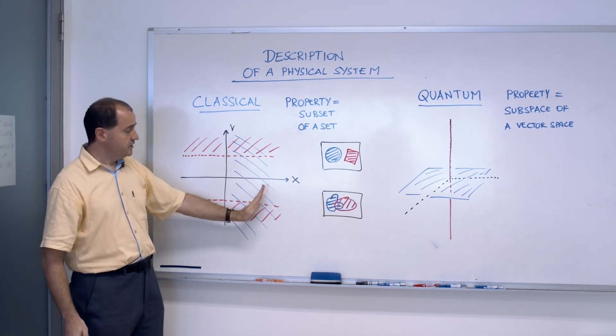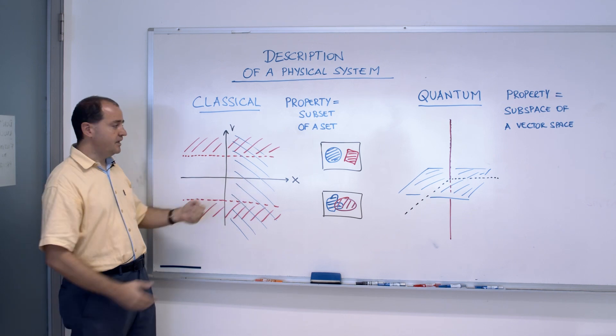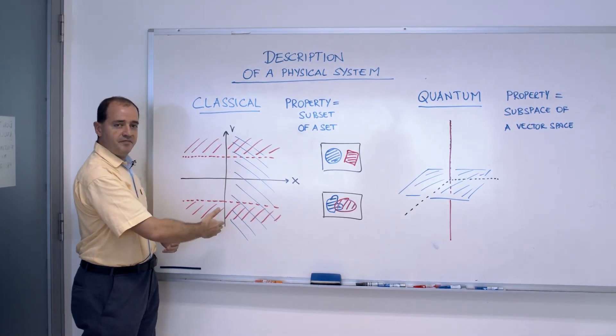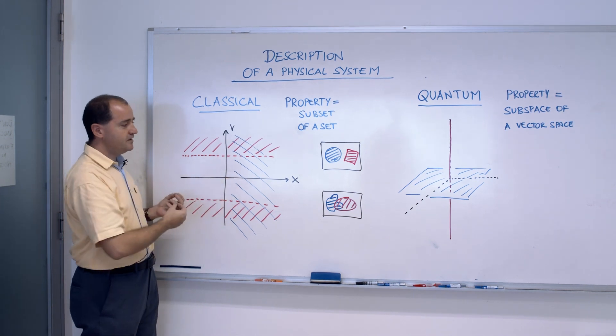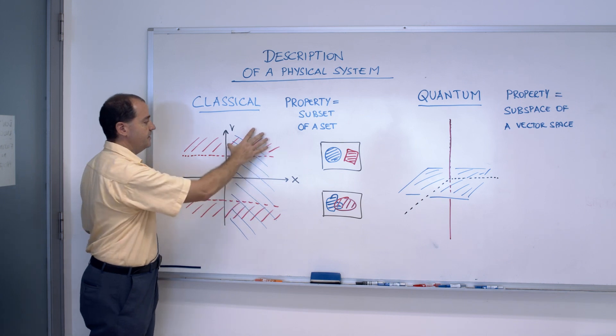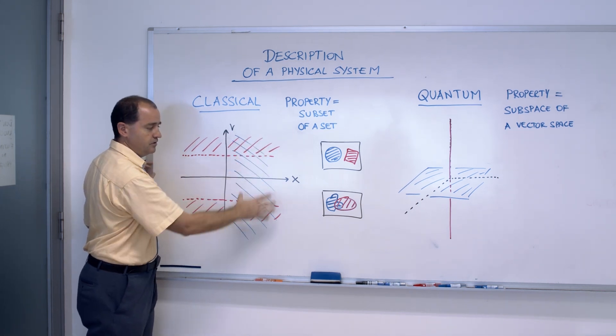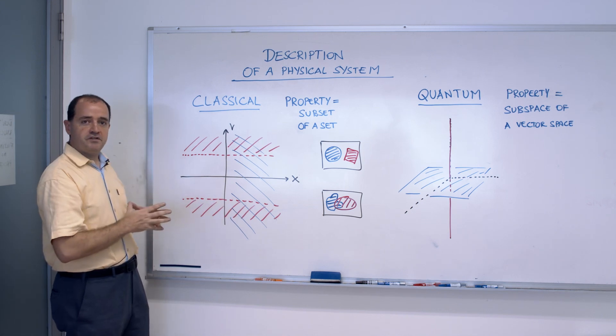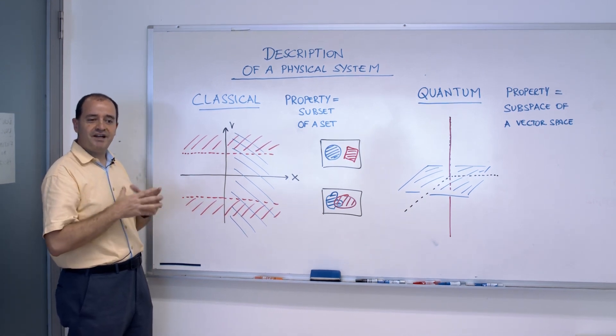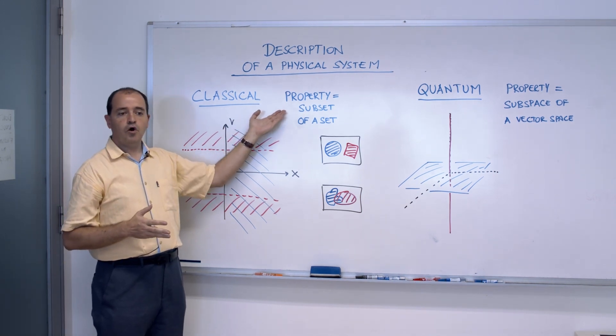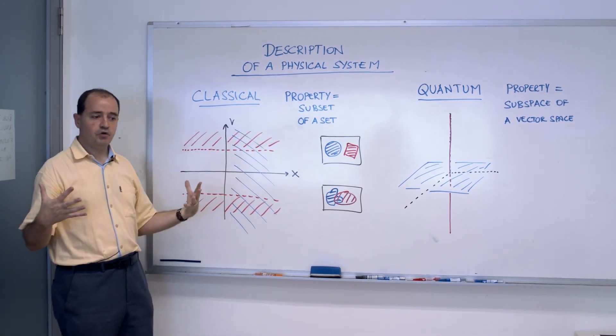The blue set describes the cars that are east of this line. Now of course, the cars that are east of the line and exceed the speed limit are in the intersection between the two sets. So all the physical properties in a classical description, in our natural intuitive description, are subsets of a set of properties, of a set of states.